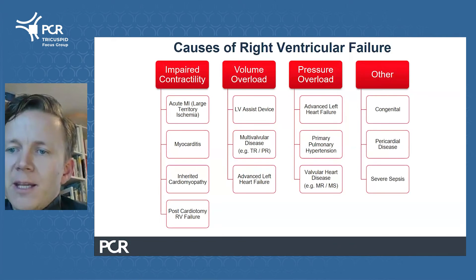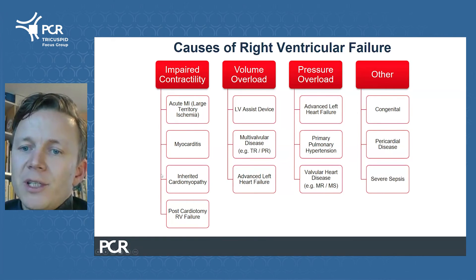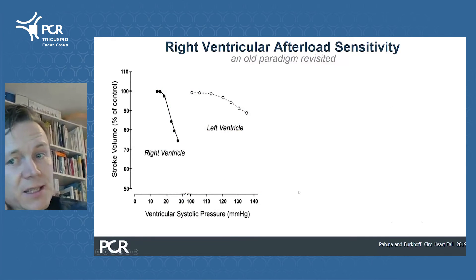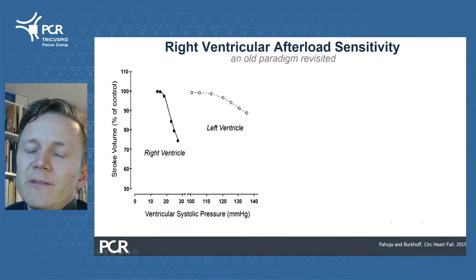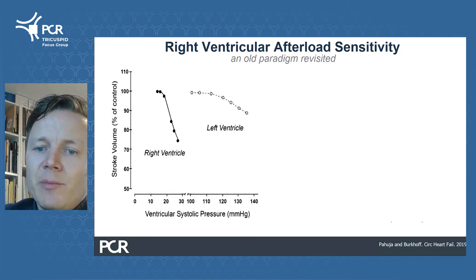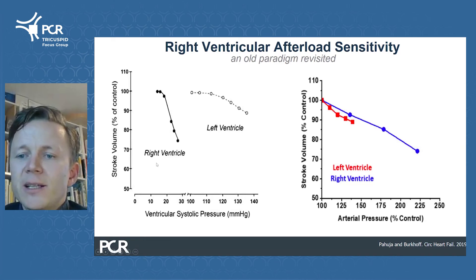Besides volume overload, there are other mechanisms by which right heart failure might occur, including factors associated with impaired intrinsic contractility or, as we typically see in our patients, pressure overload. You may have come across the 50-year-old concept of right afterload sensitivity, which states that for a given increase in pressure, the RV decreases more in stroke volume than the LV. However, when plotting changes in stroke volume as a function of percentage changes in peak pressures, the RV and LV curves are not that different, really questioning this existing paradigm.